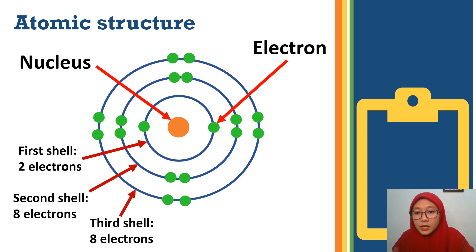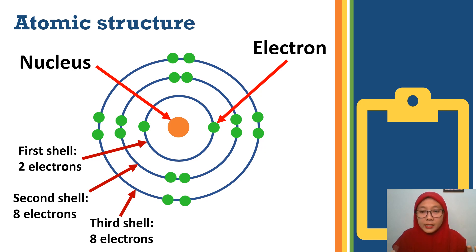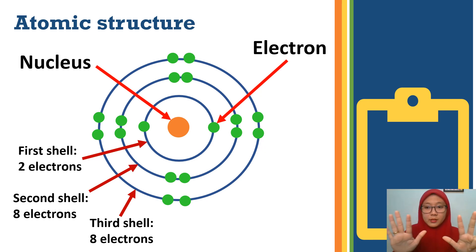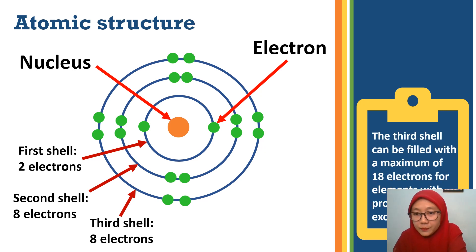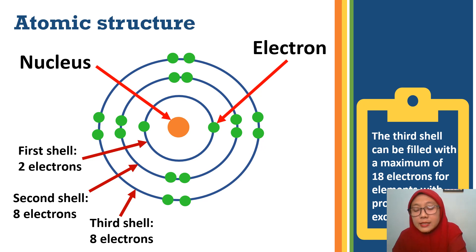The first shell can only fit two electrons. The second shell can only fit eight electrons. The third shell can be eight electrons, but the maximum number of electrons that can fit into the third shell is 18 electrons.